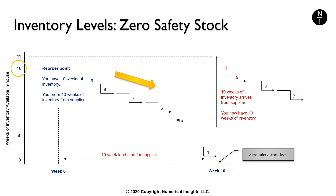Now, demand is never constant in the real world, but I'll show you how to deal with that in just a moment. Since we know we will run out of inventory in 10 weeks, and we see that our supplier has a 10-week lead time, we must order 10 weeks of inventory when we have 10 weeks in stock. A new supply would arrive just as we run out of our in-house inventory.